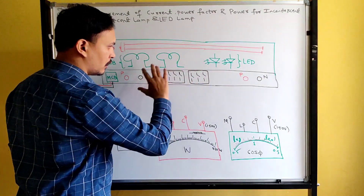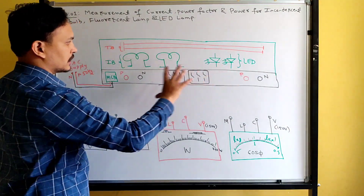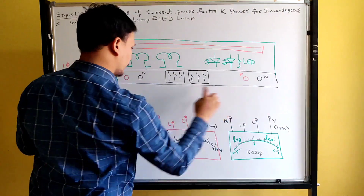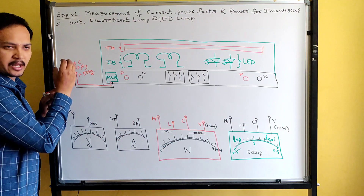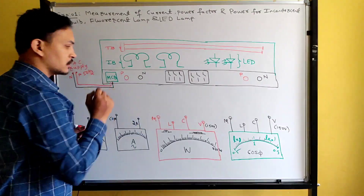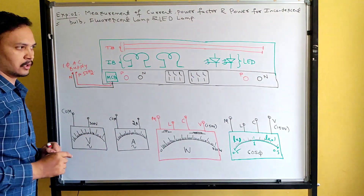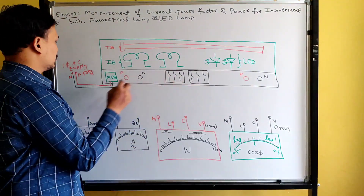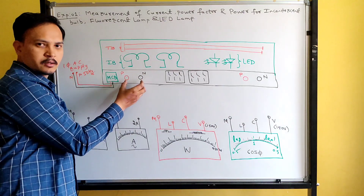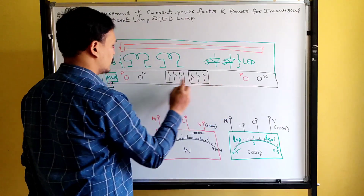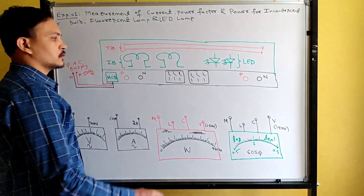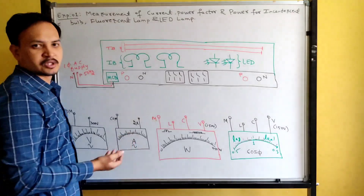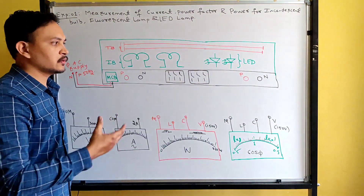Totally six lamps, and all the lamps are connected in parallel. Now, give supply to this MCB — this entire panel board. This entire lamp load bank is connected to the single phase AC supply. These two are supply terminals and these two are load terminals. If I switch on the MCB, this supply will come and be available at this point. But if you connect phase to phase and neutral to neutral directly, you cannot measure power consumed, current carried by the load, or power factor of the load.